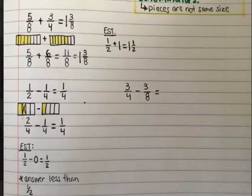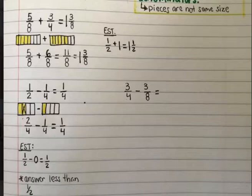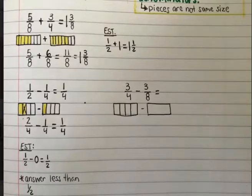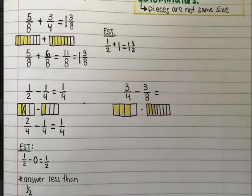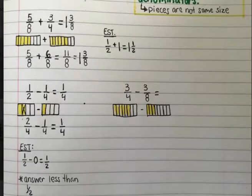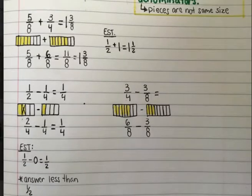Here's one more example. If you would like, pause the video, try it on your own, and then continue to check your work. So the first thing we want to do is model. We have three fourths and we have three eighths. Are those pieces the same size? No, they're not. So we have to partition. We're going to partition to find an equivalent fraction to three fourths. Three fourths is equivalent to six eighths, and six eighths minus three eighths is what we're going to solve.